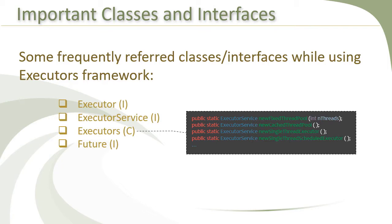For creating an ExecutorService backed by a fixed thread pool, you call the newFixedThreadPool method. It takes an integer parameter named nthreads that specifies the number of threads you want in the pool. This means that at any time, at most nthreads number of tasks can execute concurrently.